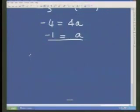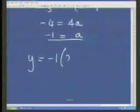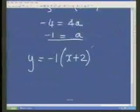So that would be 4a is equal to negative 4a is still negative 1. And so the equation of the parabola would be negative 1x plus 2 all squared plus 1.